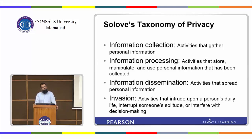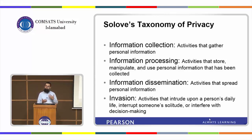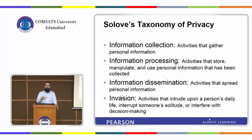There are four types of activities related to privacy. The first is information collection — gathering information about individuals or groups. Different public and private organizations collect such information for different reasons, and sometimes we provide this information voluntarily and sometimes involuntarily.